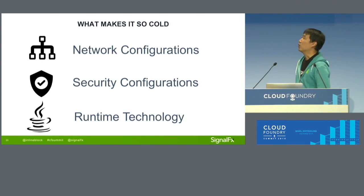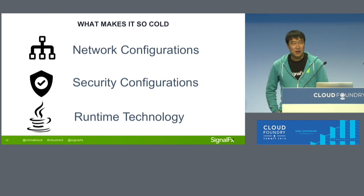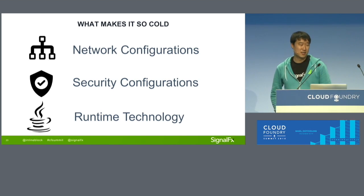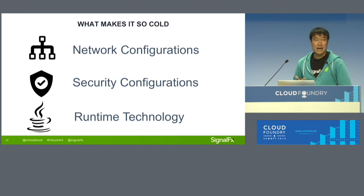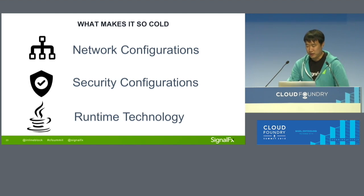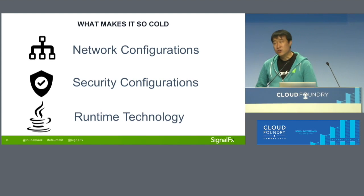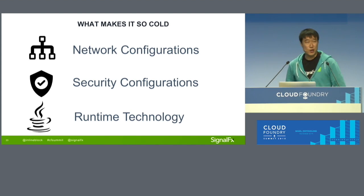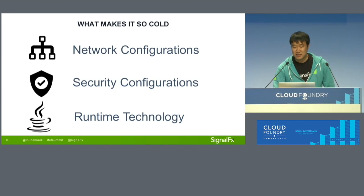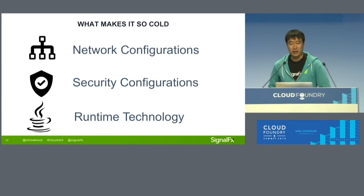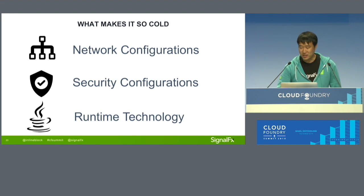What makes cold starts so costly? Network configuration and security configuration get applied to your container when it initializes. Runtime technology varies a lot from runtime to runtime — Python is very fast from what we measured, Node is okay, and Java is really slow to start up. These are things you can potentially optimize. Container provisioning has to be done regardless, so there's nothing you can avoid there.